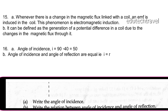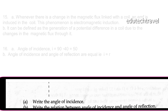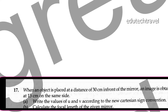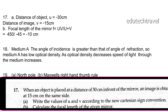When an object is placed at a distance of 30 cm in front of a mirror, an image is obtained at 15 cm on the same side. Using the new Cartesian sign convention: u = −30 cm, v = −15 cm. The focal length f = uv / (u + v) = −10 cm.